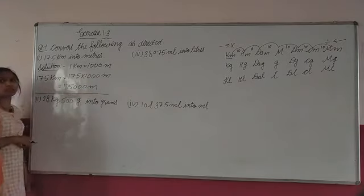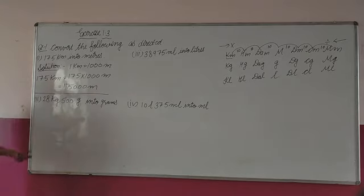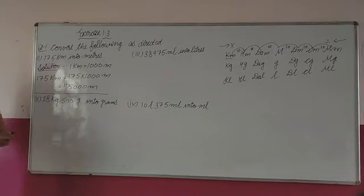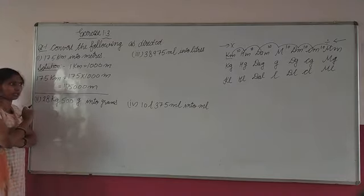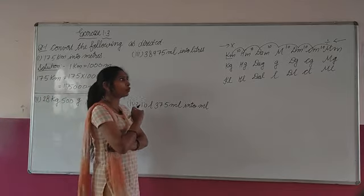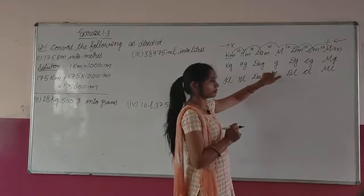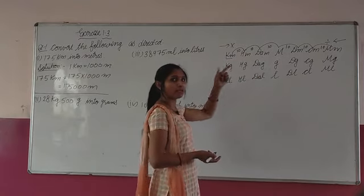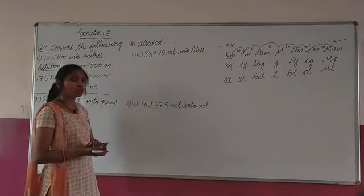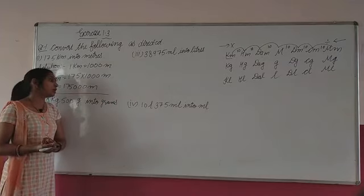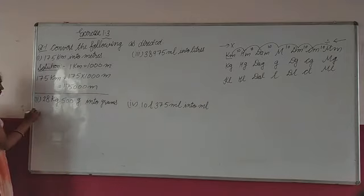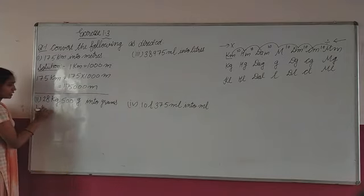Now the second part. Second part kya hai? 28 kg 500 g into grams. Change kis mein karna hai? Gram mein. Question kis mein hai? Kilogram aur gram mein. To ab kilogram to gram — 1, 2, 3 — 3 steps, left to right gaye. To kilogram se gram mein change karenge, to kya hoga? Multiply — 1,000 se. Same way mein solution karna hai.